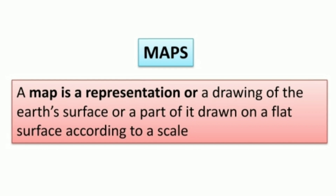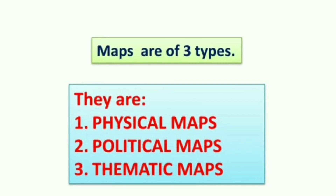A map is a representation or a drawing of the earth's surface or a part of it drawn on a flat surface — here flat surface means a sheet of paper. This representation is done on paper according to a scale. Maps provide more information than a globe.